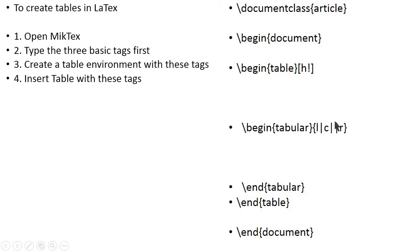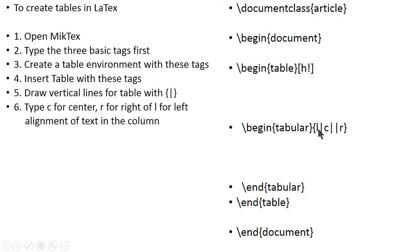What do these vertical lines mean? These vertical lines are for drawing vertical lines in the table, or you can call them column separators. One column is separated from the other by this vertical line. And what do L, C, and R mean? C means center — if you want your data center-justified, put C. If you type R, data will be right-justified. If you write L, data will be left-justified.